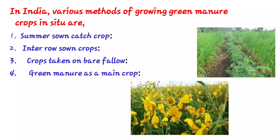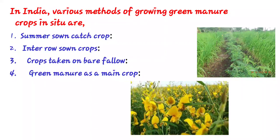The main crop is buried in the field after six to eight weeks. Examples include dhaincha intercropped with paddy, also sun hemp, cowpea and cotton. Also methi, berseem sown in orchards, and for sugarcane.